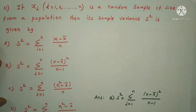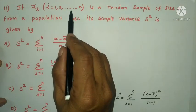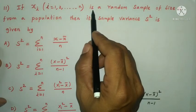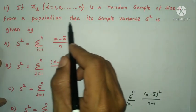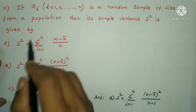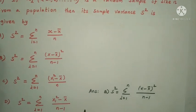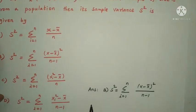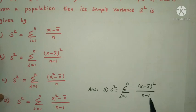Next question: if xᵢ where i = 1 to n is a random sample of size n from a population, then its sample variance s² is given by option B: s² = Σᵢ₌₁ⁿ (xᵢ - x̄)² / (n-1).